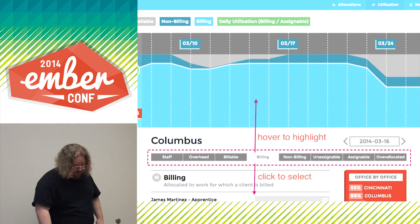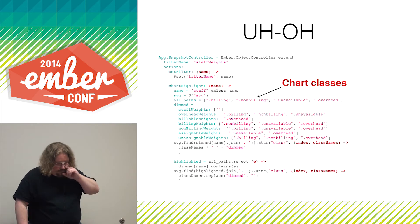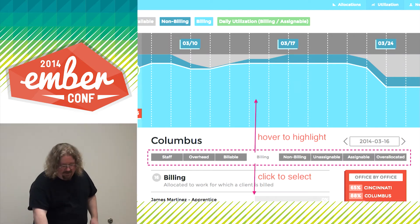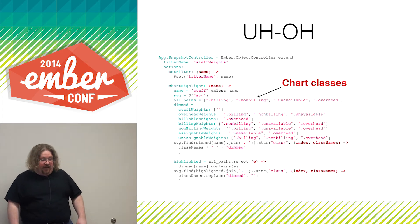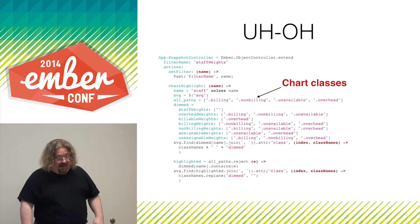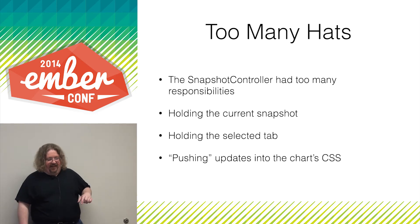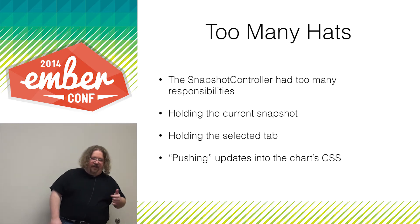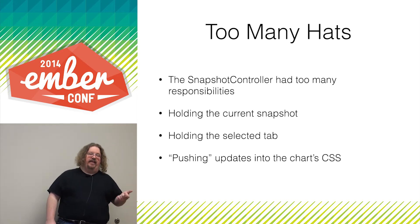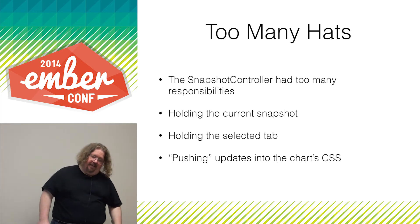That tab bar does a bunch of stuff. This is what the code looked like when we started — don't try to read it too hard because it's bad. What you'll notice is we have a SnapshotsController. A snapshot is basically the list of things we're looking at with all the different people. And the SnapshotsController suddenly has acquired all this knowledge about how the chart is represented — the CSS styles applied to the SVG in the chart — and it's just going around doing things to the chart. The SnapshotsController had way too many responsibilities.